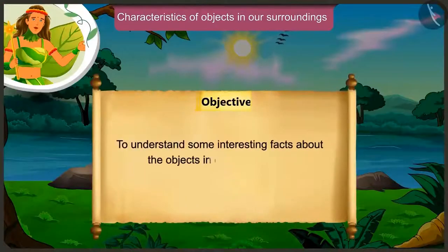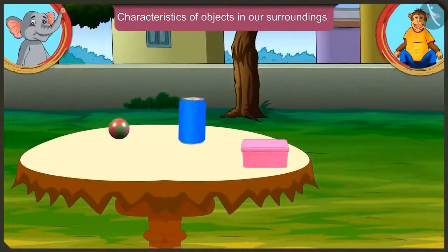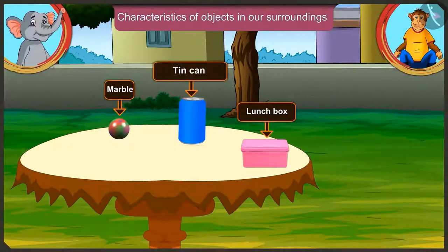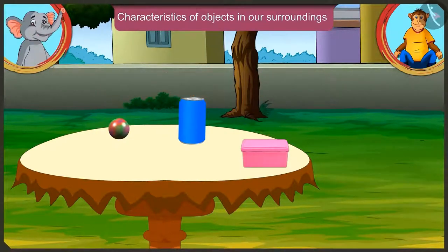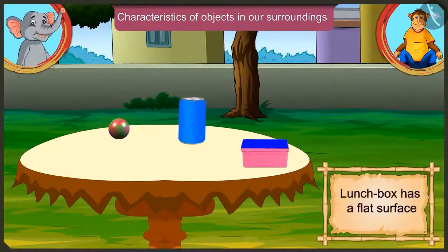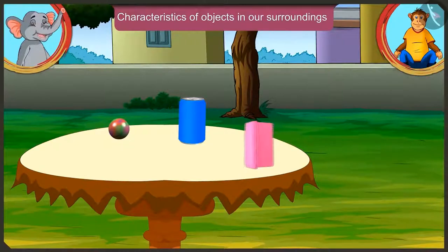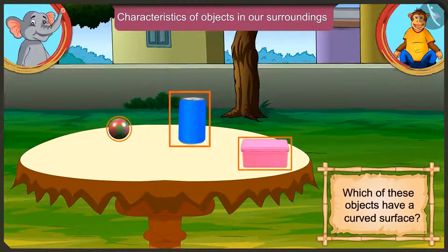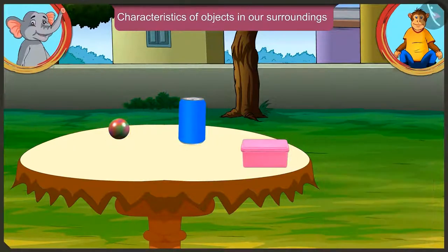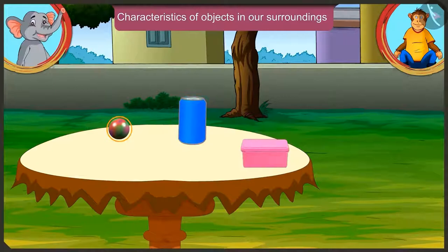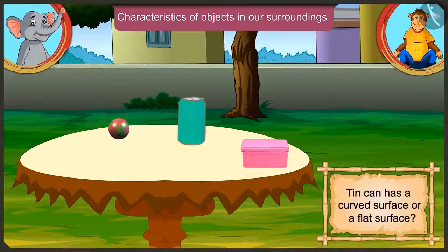Today we will understand some interesting facts about the objects in our surroundings. Here are a marble, a lunchbox and a tin can. The lunchbox has a flat surface, which we can also move by putting it upright. The marble has a curved surface. The tin can also stands upright like the lunchbox, but it is also curved like the marble - so does it have a curved or flat surface?